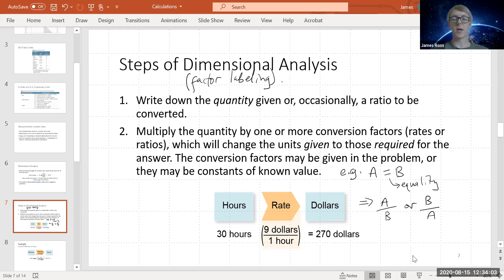Notice this was an equality. So this rate was an equality. I know that $9 is equal to one hour of work. So I can either have one hour over $9, or I can write $9 over one hour.